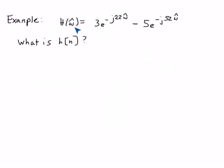So here's the example I'd like you to try. h of omega hat is equal to 3e to the minus j 22 omega hat minus 5e to the minus j 52 omega hat. Just figure out what h of n is. So why don't you pause the video and solve this problem and then restart the video and see if you got the right answer.